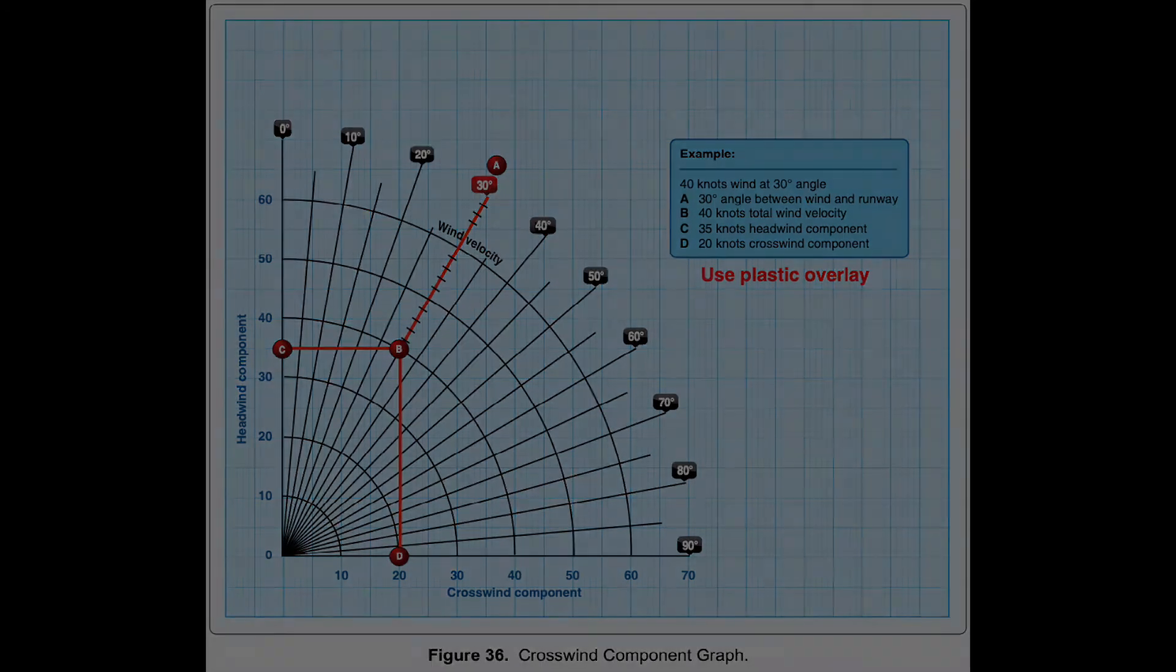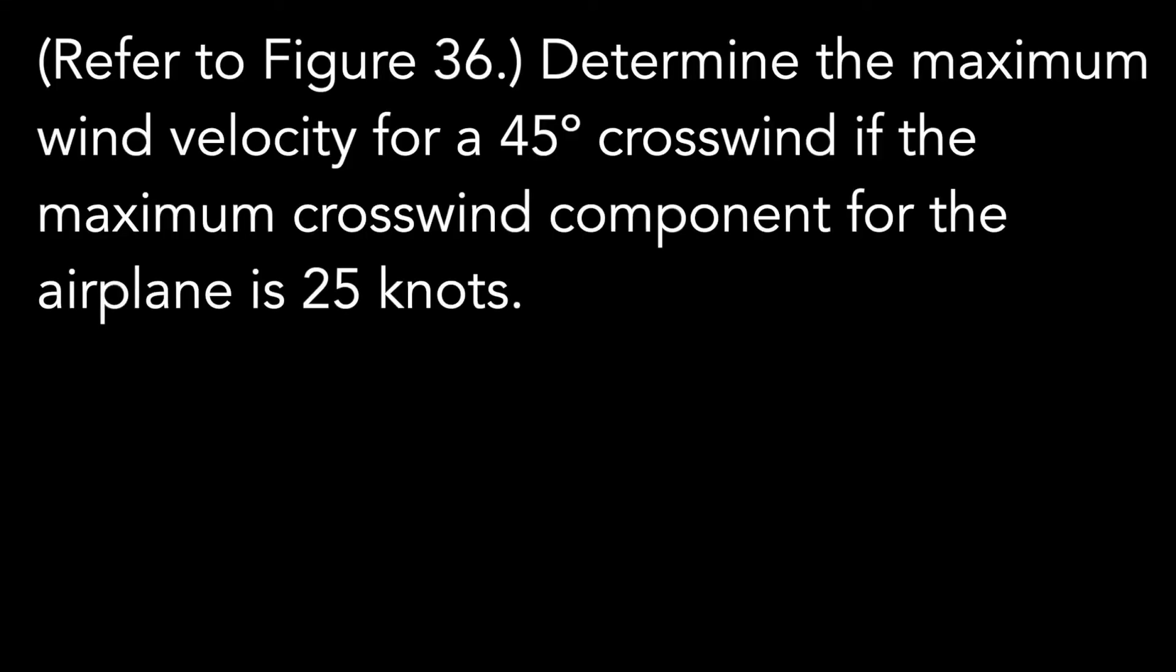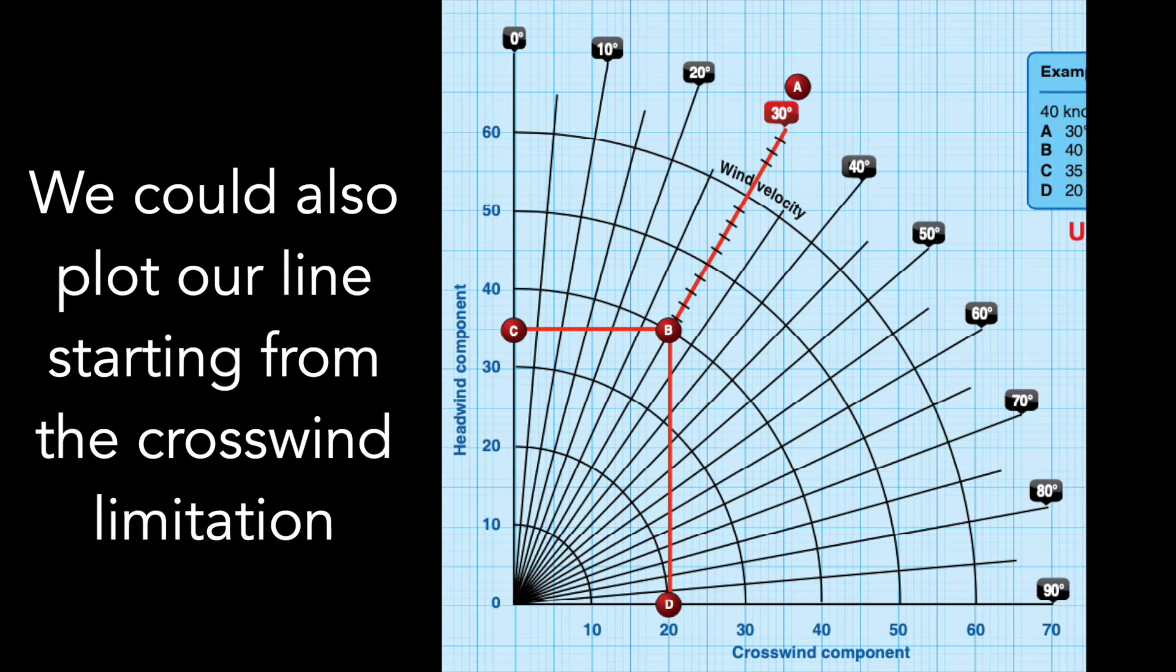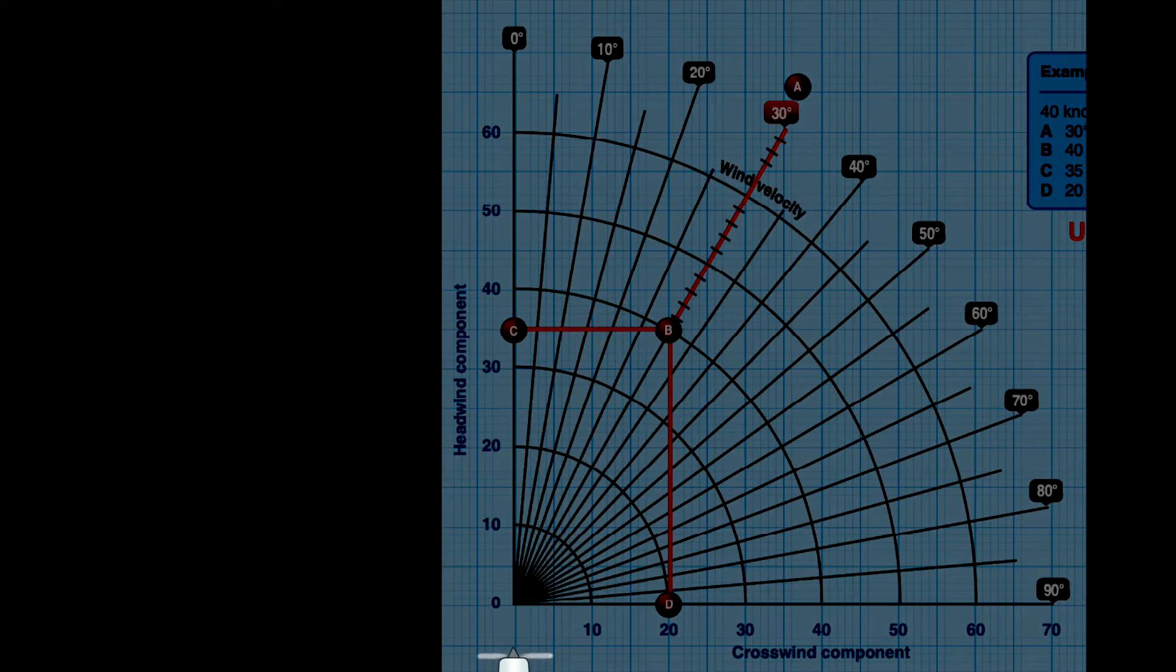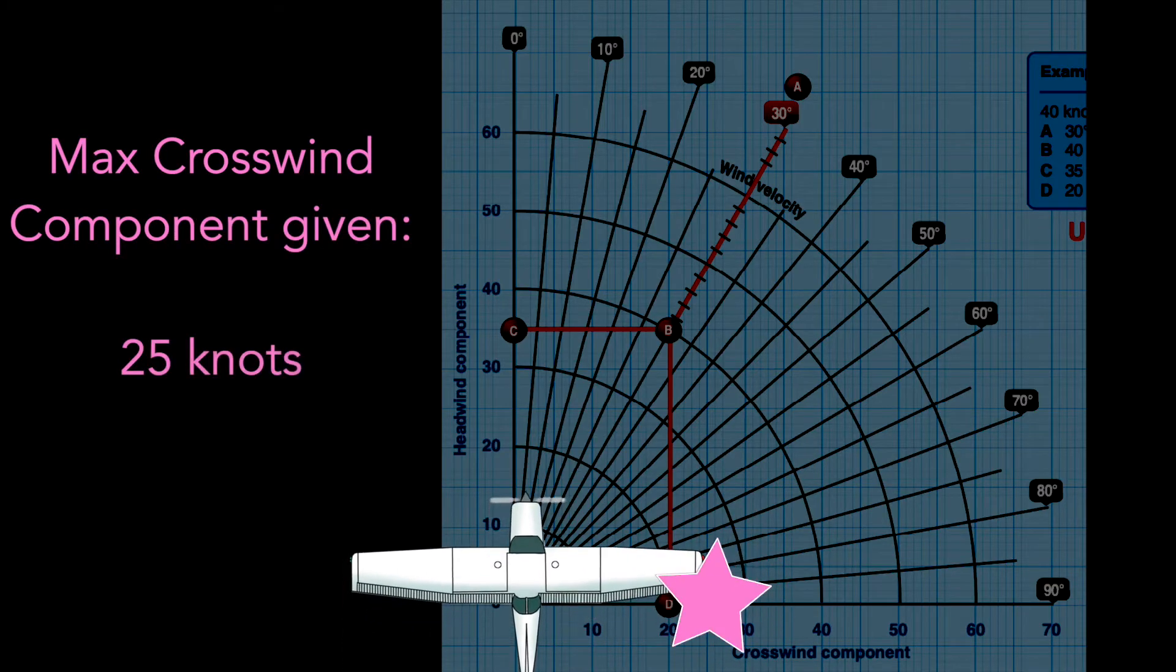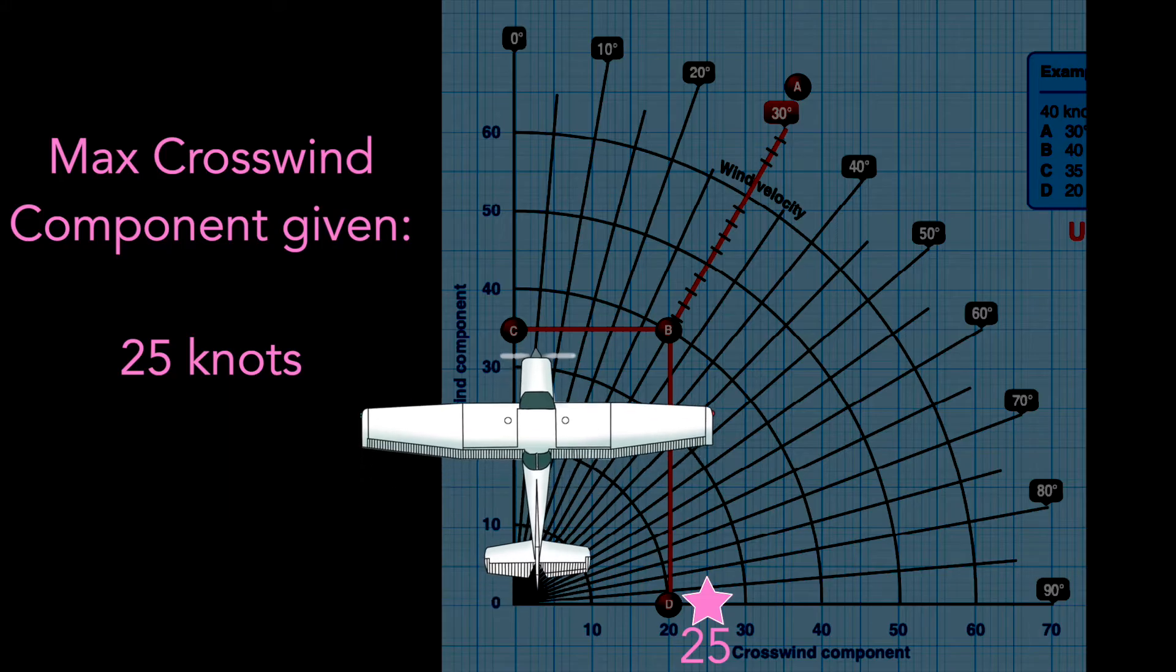How about if we had to approach this chart in a different order? Such as if we are asked to determine the maximum wind velocity for a 45 degree crosswind if the maximum crosswind component for the airplane is 25 knots. This means we need to reverse or change our starting point on this chart compared to our earlier questions.